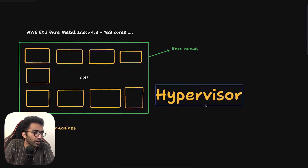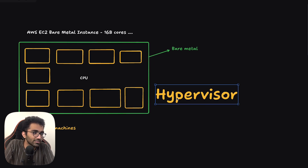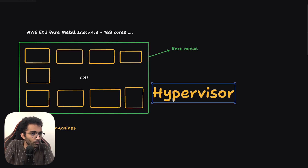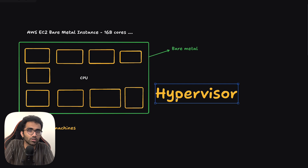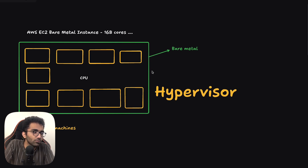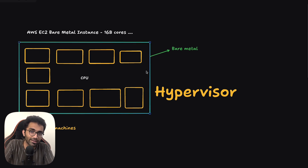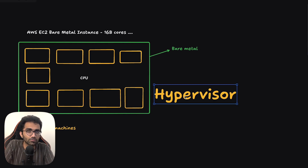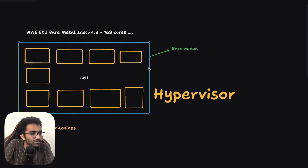This computer is running a hypervisor. Think of it as a program — it could be a software or a hardware-level thing — but mostly you would be familiar with a software. Think of it as a program which allows you to run multiple virtual machines on a single physical host. In reality, this is a single host; it would have certain disk, memory, RAM, and CPU cores attached to it.